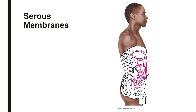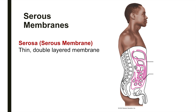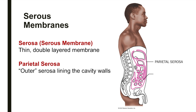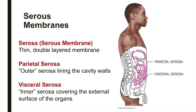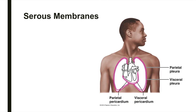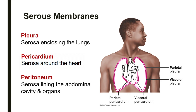Our body cavities house and protect our internal organs. To protect organs from the friction of rubbing against one another or the body cavity itself, the walls of the ventral body cavity and the outer surfaces of the internal organs are covered with a thin, double-layered membrane called the serosa, or serous membrane. The serosa lining the cavity walls is called the parietal serosa, while that covering the external surface of the organs is called the visceral serosa. These membranes produce a lubricating fluid that allows organs to slide over one another and reduce friction. The specific names of the serous membranes depend on the structures they surround.